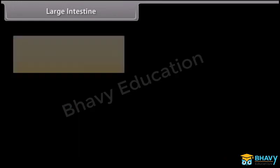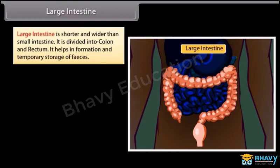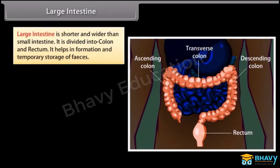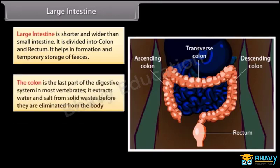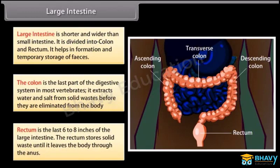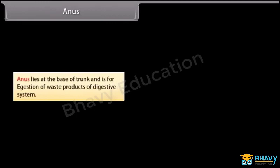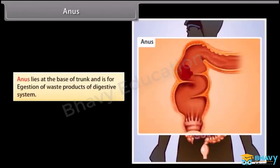Large intestine is shorter and wider than the small intestine. It is divided into colon and rectum. It helps in the formation and temporary storage of feces. The colon extracts water and salt from solid wastes before they are eliminated from the body. Rectum is the last 6 to 8 inches of the large intestine and stores solid waste until it leaves the body through the anus. The anus lies at the base of the trunk and is for egestion of waste products of the digestive system.